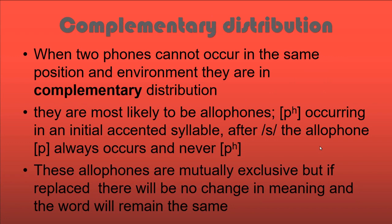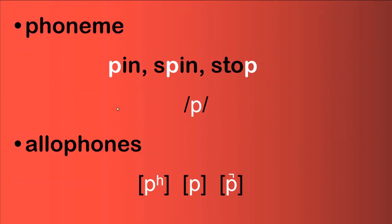Complementary distribution is not as complicated as it looks. When two phones cannot occur in the same position, they are said to be in complementary distribution. Allophones are typically in complementary distribution. For example, the aspirated 'puh' can occur only in an initial accented syllable — it cannot occur in the medial position. And 'puh' and unreleased 'puh' cannot occur in the same position.